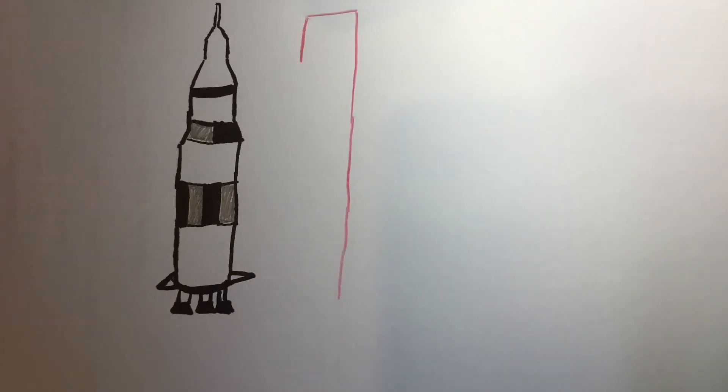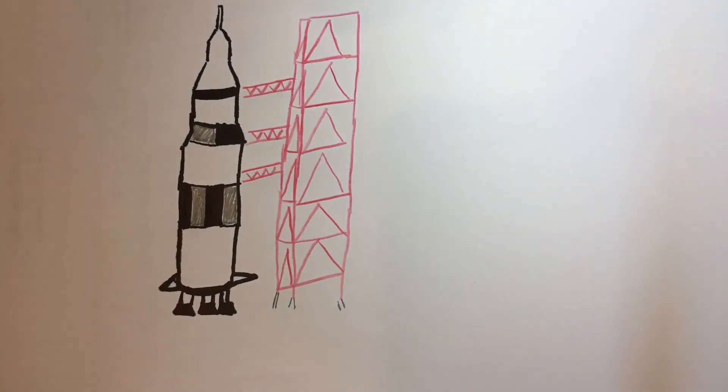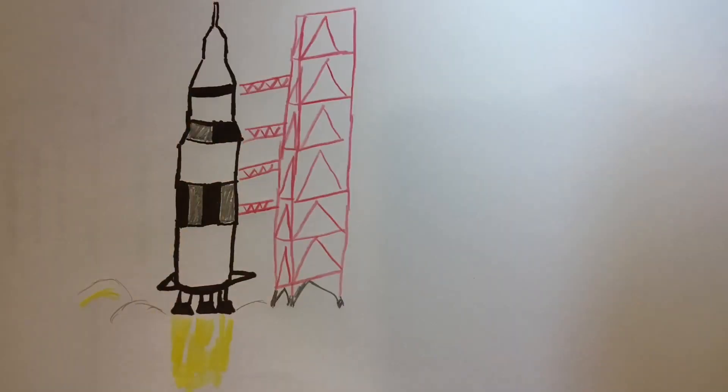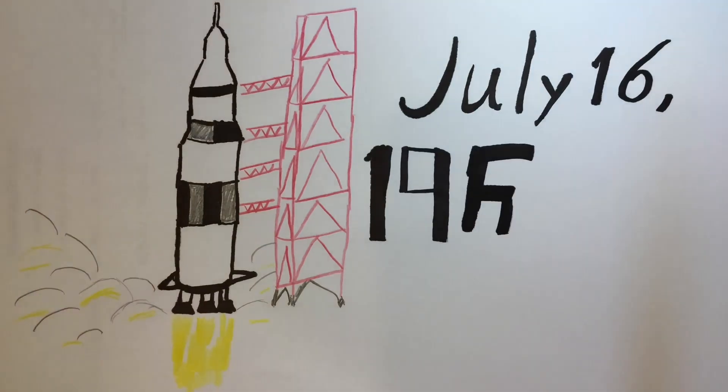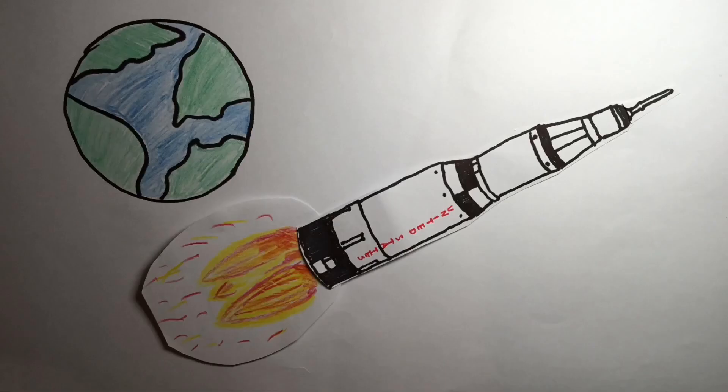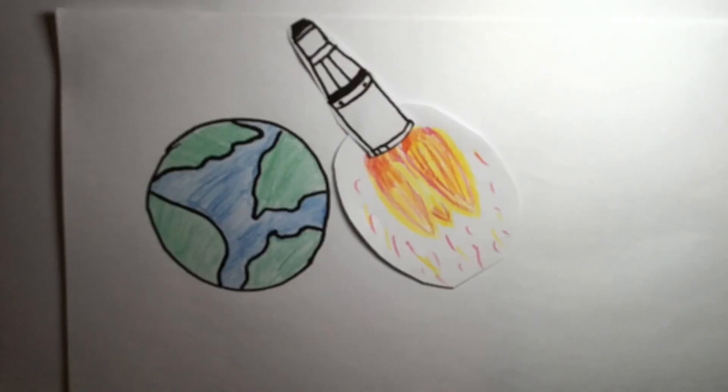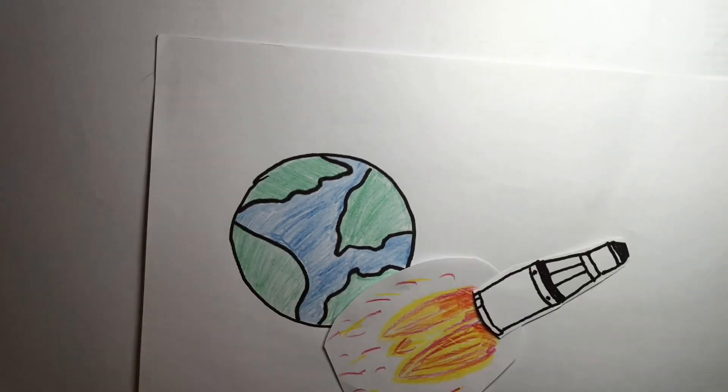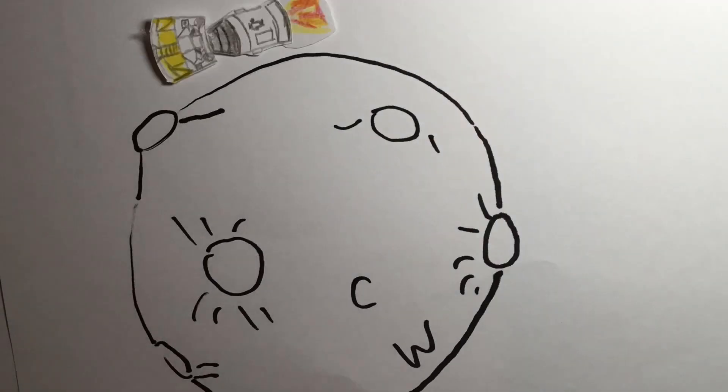He would then join Neil Armstrong and Michael Collins. As they went up there, the countdown started and they launched on July 16, 1969. Saturn V rocket would then split into smaller pieces, orbit the Earth and the Moon, and then they would start the crew to go into different areas.